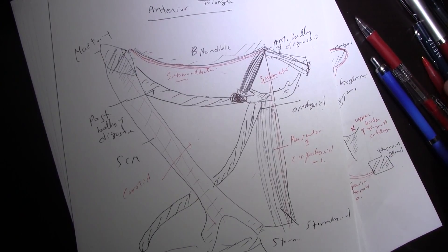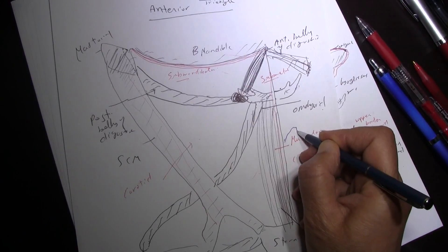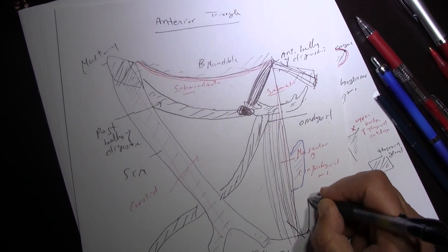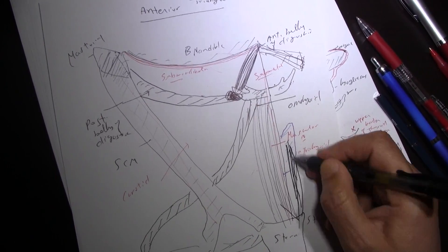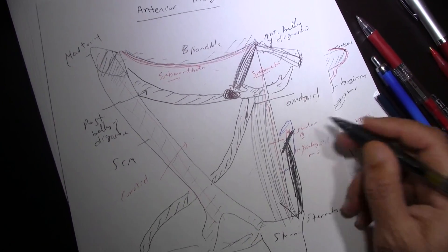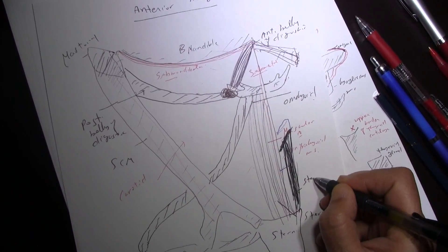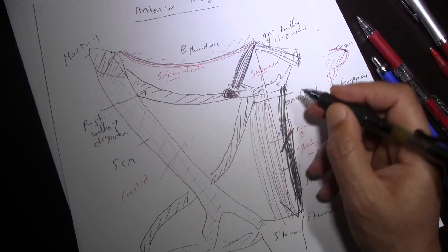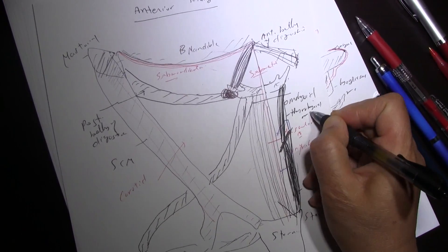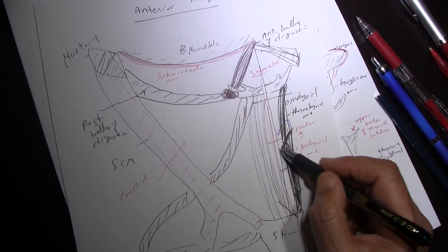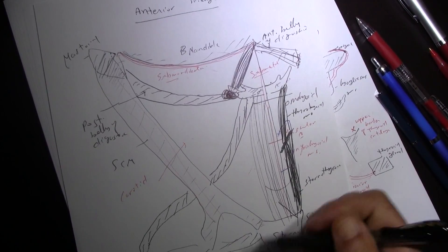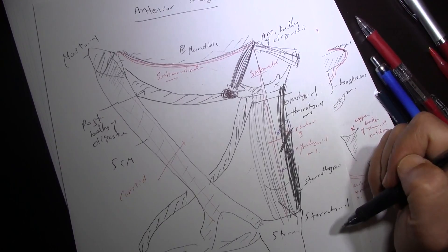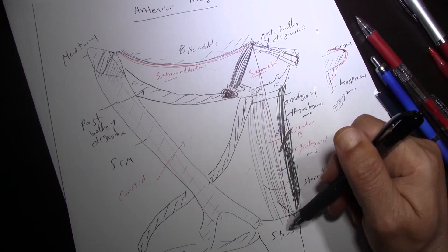This is the thyroid cartilage. If you cut the sternohyoid, you will see a muscle extending from the sternum to the oblique line on the lateral side of the thyroid cartilage — this muscle is called the sternothyroid. Another muscle extends from this oblique line to the hyoid bone and is called the thyrohyoid. This muscle covers the thyroid gland.